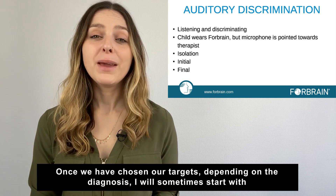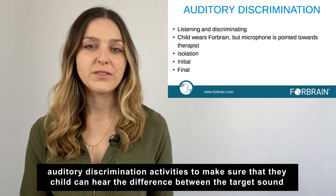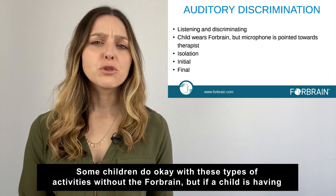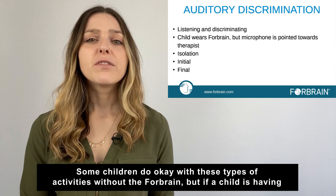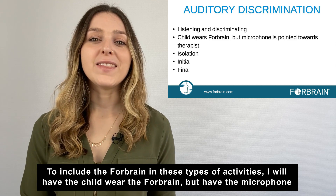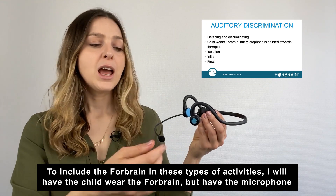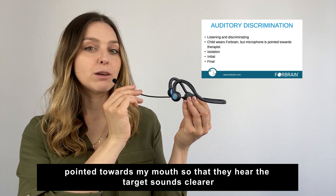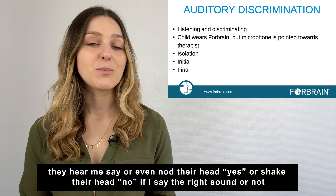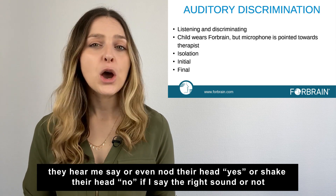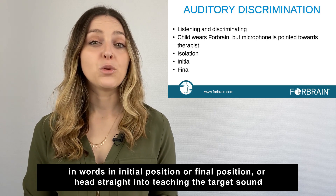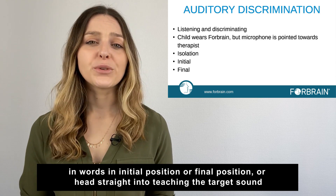Once we have chosen our targets, depending on the diagnosis, I will sometimes start with auditory discrimination activities to make sure that the child can hear the difference between the target sound and the sound that they are substituting it with. Some children do okay with these types of activities without the Forebrain, but if a child is having a hard time discriminating, then we can use the Forebrain to give them a boost. To include the Forebrain in these activities, I will have the child wear the Forebrain but have the microphone pointed towards my mouth so that they can hear the target sounds clearer. I will first start with the sound in isolation, using visual cues so that the child can point to which sound they hear or nod yes or shake their head no. Once they're at 90% accuracy with sounds in isolation, I'll either use the sound in words or head straight into teaching the target sound.